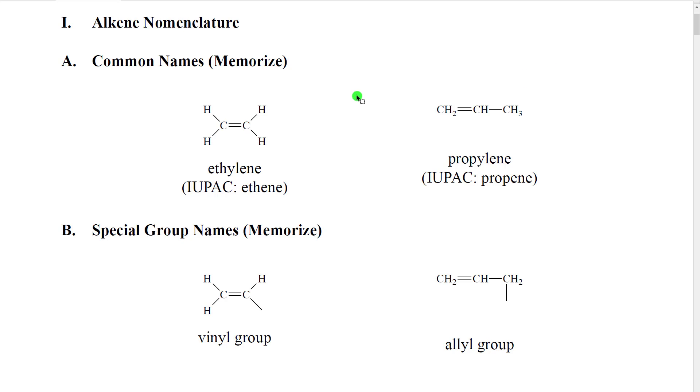As discussed previously, common names are not used that much anymore except in industry and other professions where some of these molecules are important, industrial chemicals or things like that. We're going to look at the common names of two alkenes. The rest of them we will just use the IUPAC name.